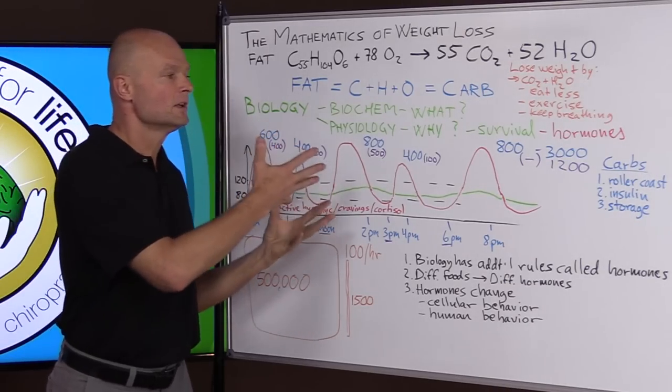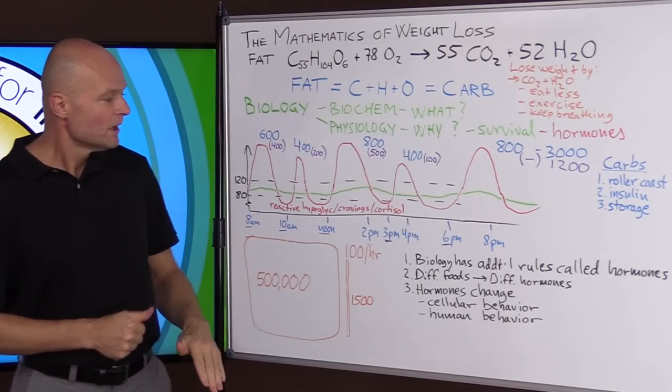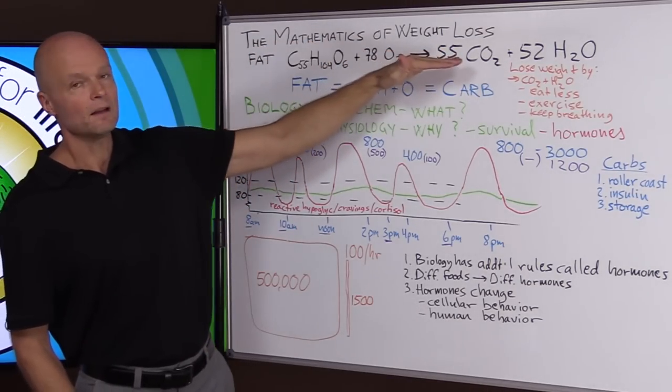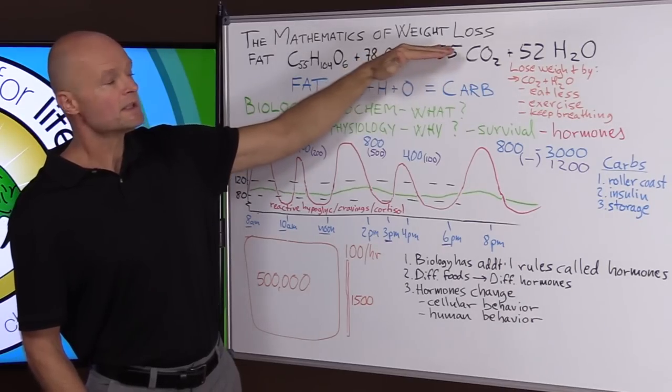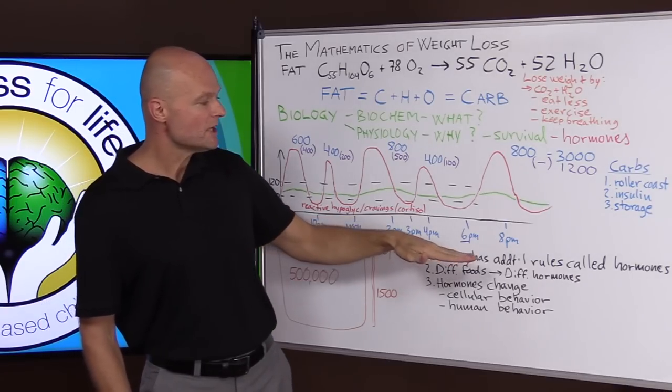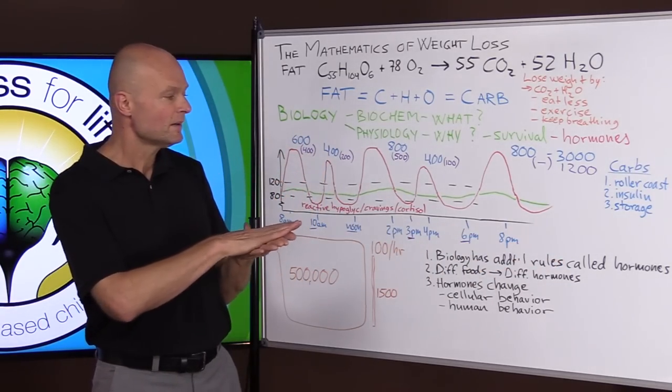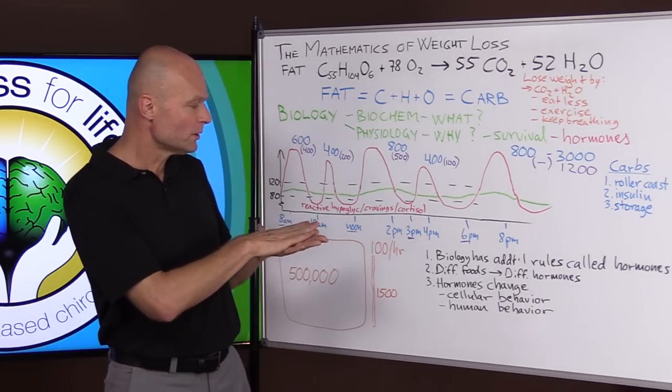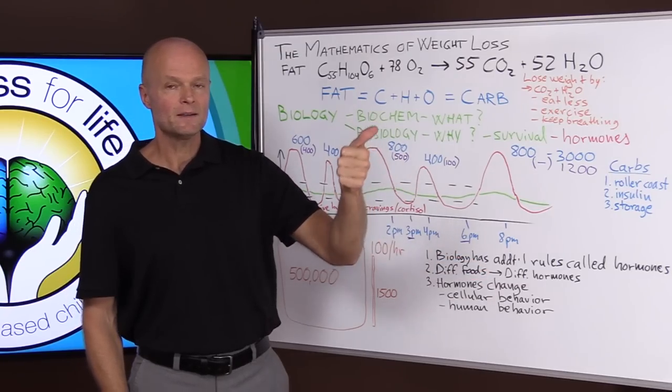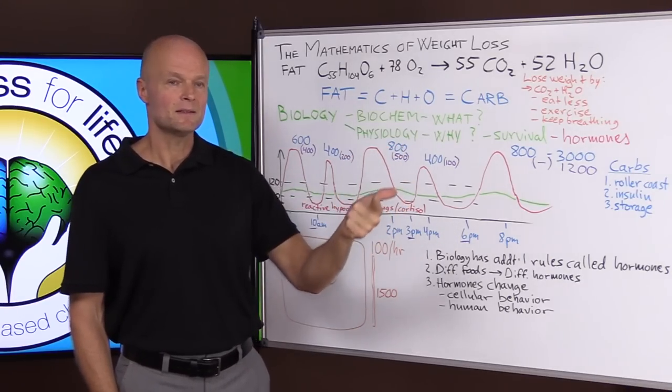So this is what we have to understand. It's not the calories. It is what happens to the calories depending on hormones. So while this is brilliant and it's geeky and I love it, it works in a physics lab. It doesn't work in biology because biology has additional rules on top of physics and they're called hormones. Hormones are triggered by different foods. Fat does not trigger insulin. Carbohydrates trigger insulin. That's the difference.